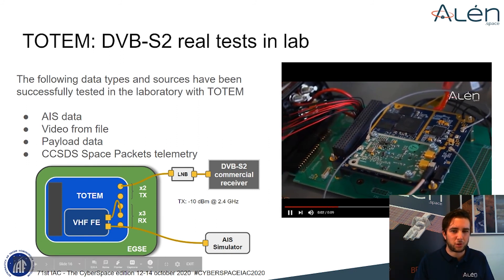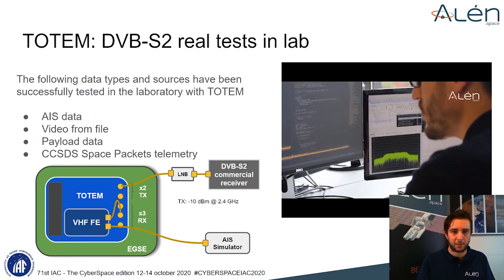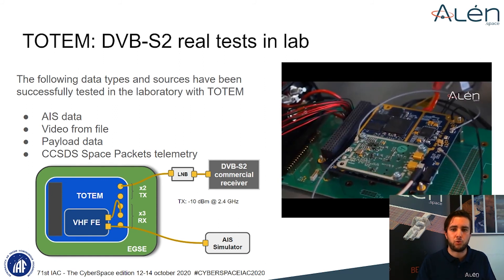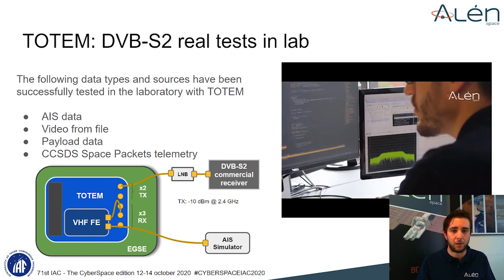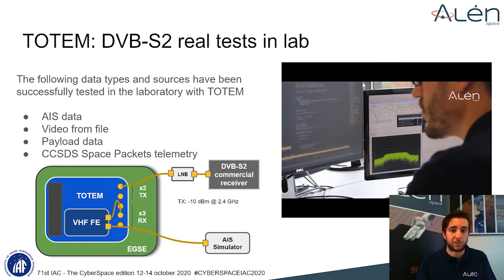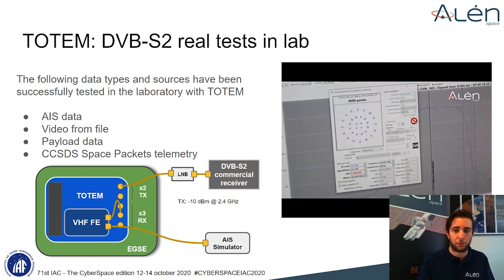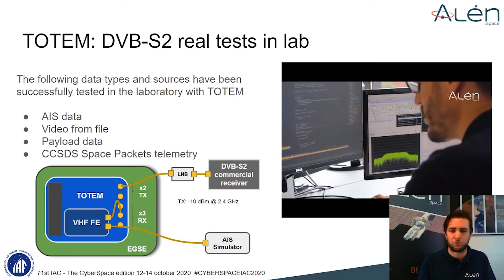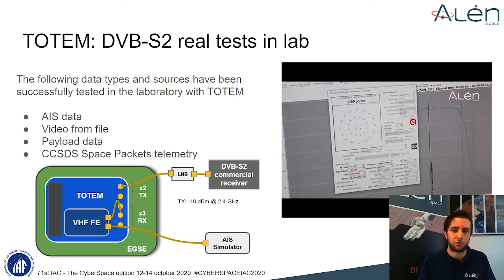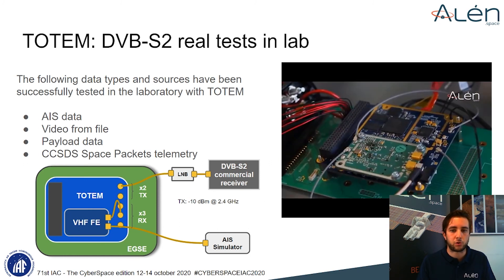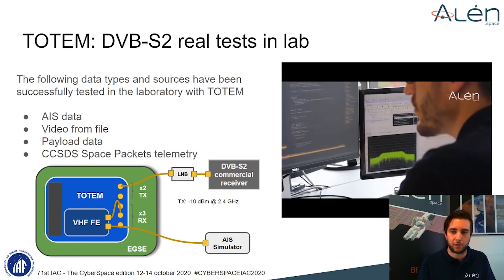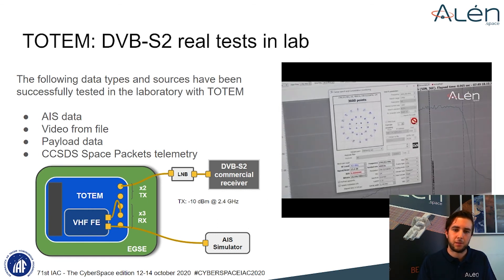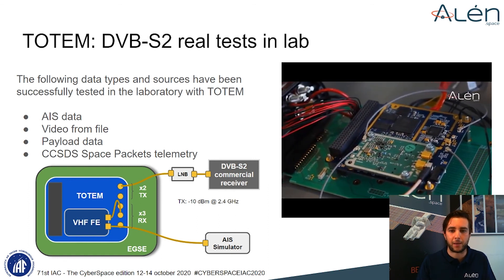What about DVB-S2 on TOTEM? We have performed several tests with different types of data and sources in our lab. For the setup, we connected TOTEM directly to a commercial DVB-S2 receiver through an LNB using S-band. As a first example, we can receive AIS data through our VHF front-end and send it through DVB-S2. Similarly, we can transmit video using a video file stored in memory. Other types of data were also transmitted, such as payload data or space packet telemetry. All of them can be combined, multiplexed, and each service treated independently according to channel conditions, so different modcodes can be applied to each frame.